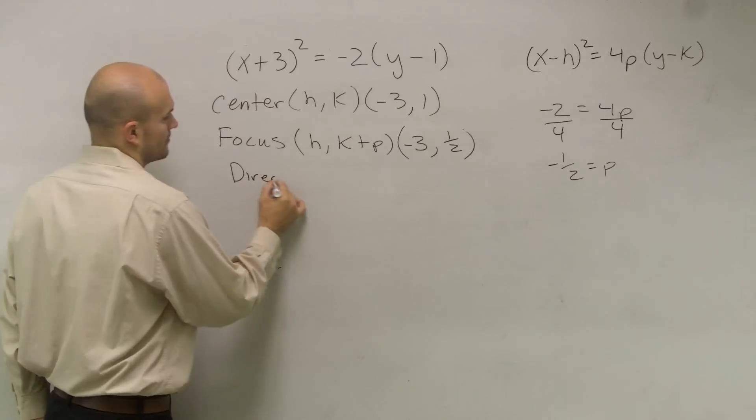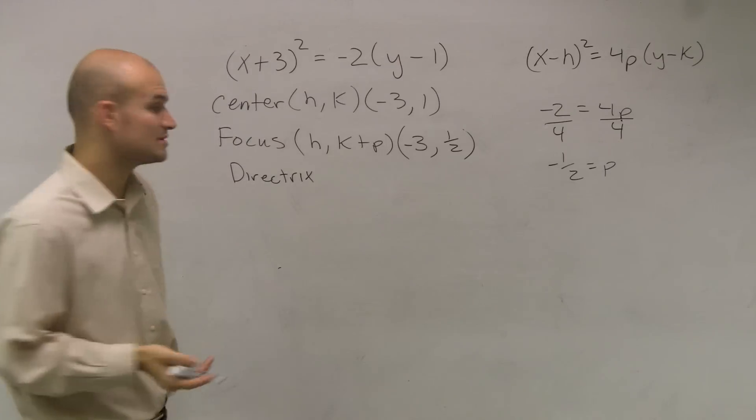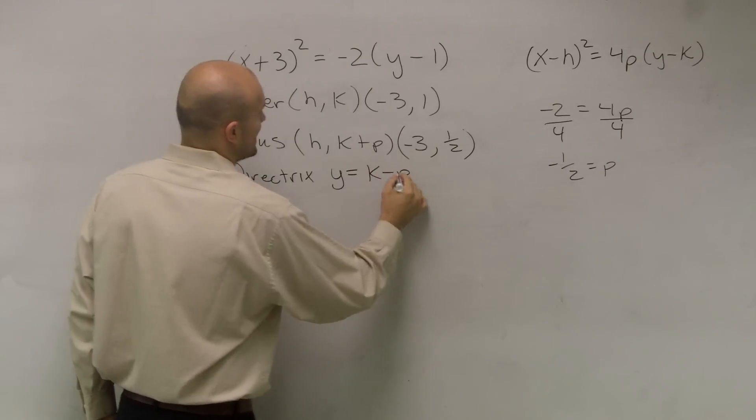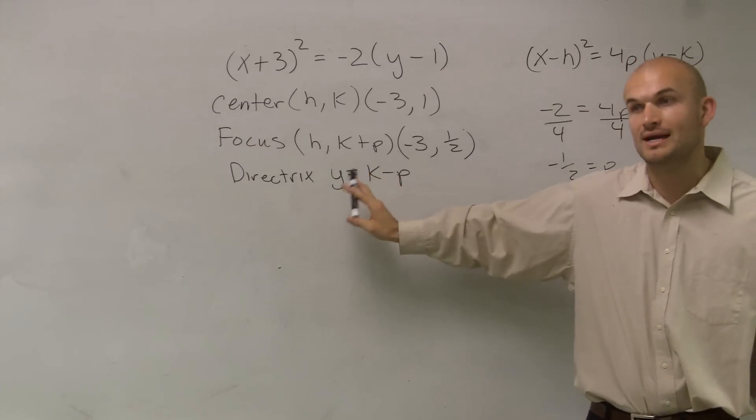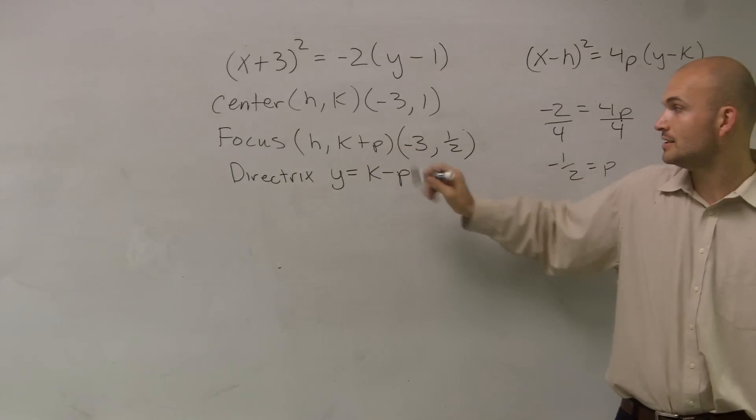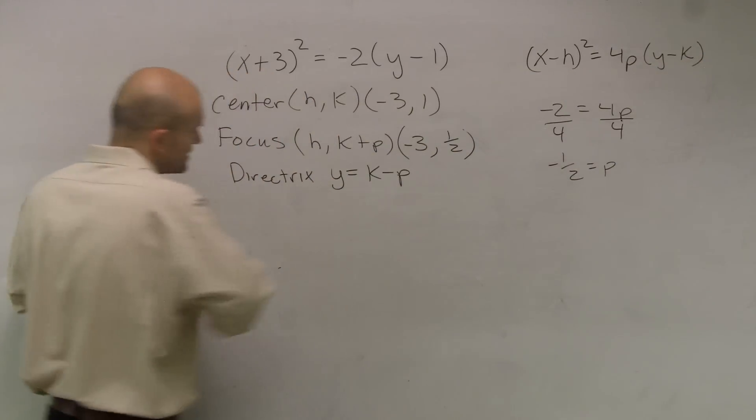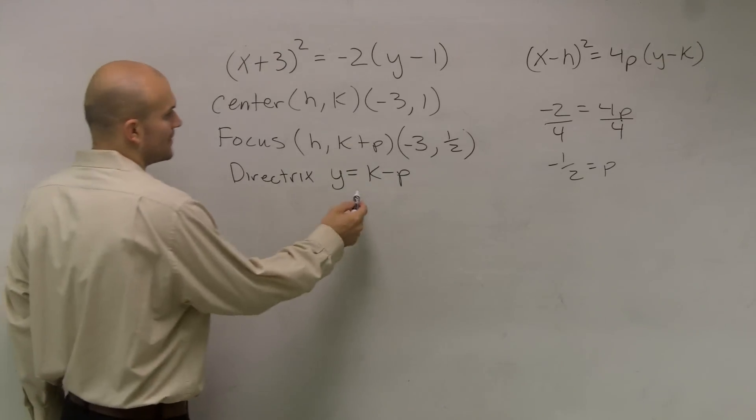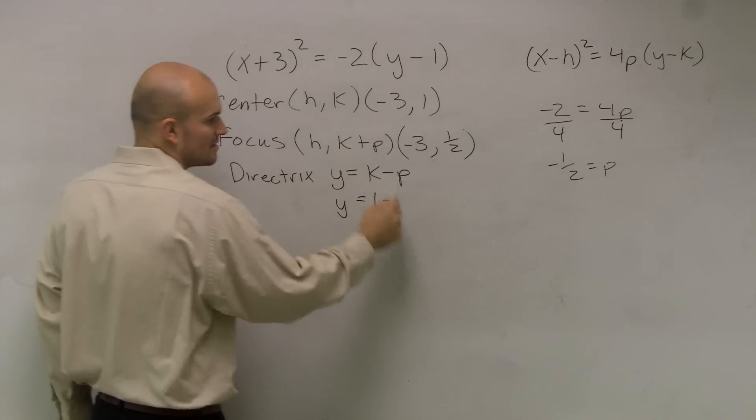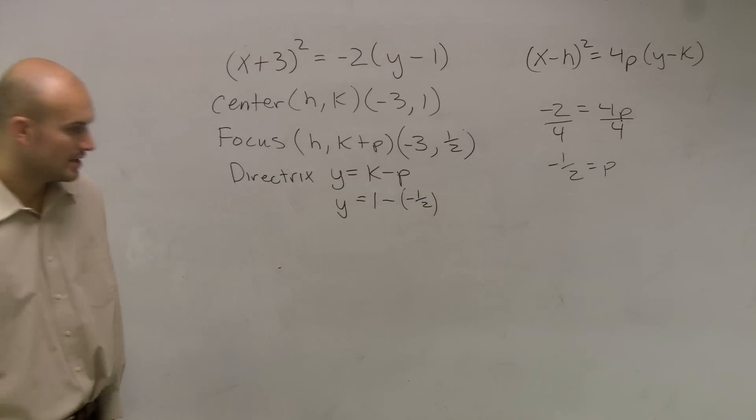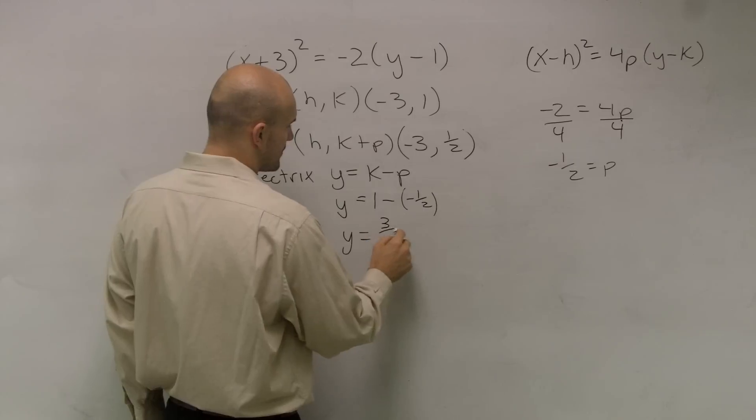Then to find the directrix, directrix is going to be very similar, but the directrix is now y equals k minus p. When you guys did your homework, I was very detailed on making sure you guys write this as a line. Your directrix is a line. It's not a point. Your focus is your point. Your directrix is your line. So since it's vertical, I'm going to be having a horizontal line. So my y is going to equal k minus p. So now I just write in y equals, and make sure you guys understand this, 1 minus a negative 1 half. So therefore, my line is going to be y equals 3 halves.